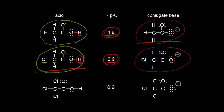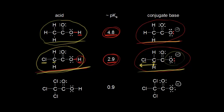We can explain this in terms of induction. Chlorine is an electronegative element — much more electronegative than carbon — so chlorine withdraws some electron density. When you withdraw electron density, you delocalize and spread out the negative charge, which stabilizes the conjugate base. Since this conjugate base is more stable, chloroacetic acid is more likely to donate its proton than acetic acid.